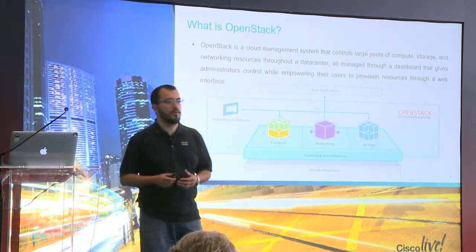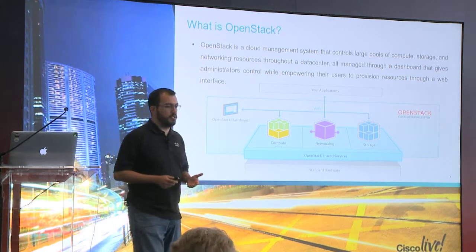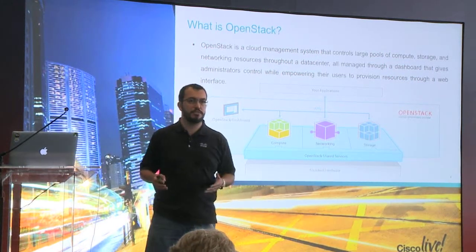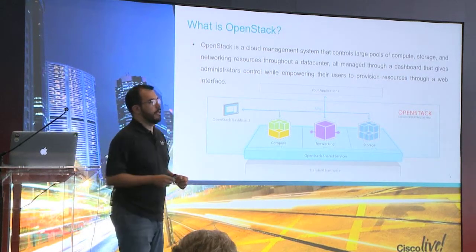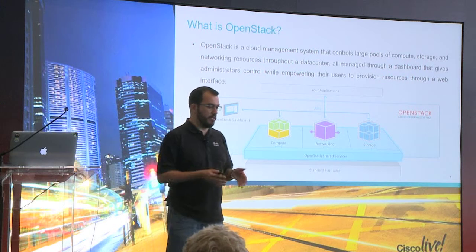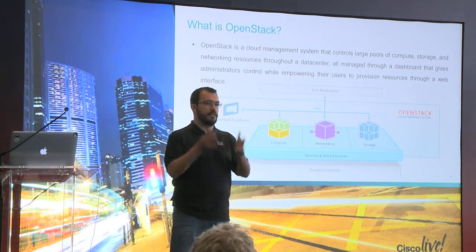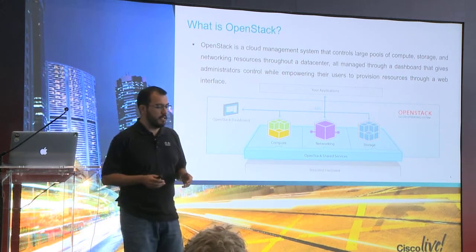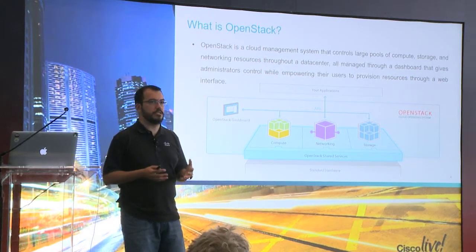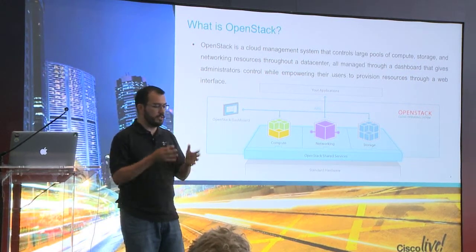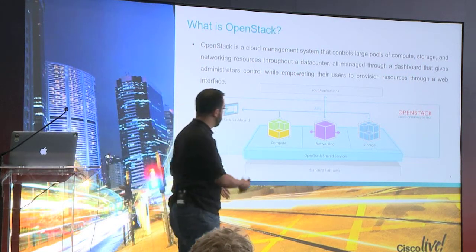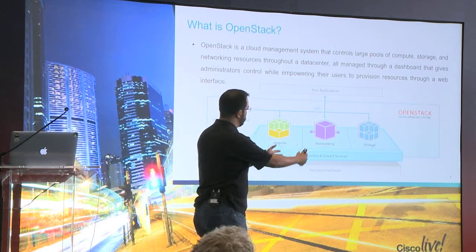So what is OpenStack? It's basically a cloud management system. It's pure software, it's all open source, and it's all written in Python. It's designed in such a way that it isolates different pillars. OpenStack and the cloud is about managing resources: computational resources, networking, storage, et cetera. So we have these three pillars that we call compute, networking, and storage.